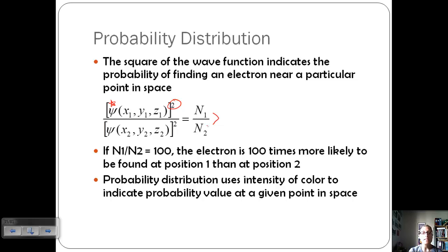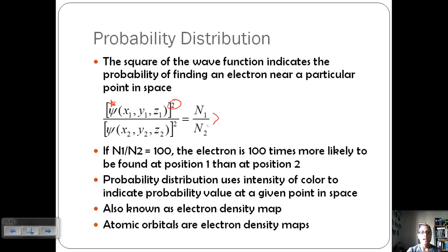Probability distribution uses intensity of color to indicate the probability value at a given point in space. And we'll look at some pictures of them. If you think of kind of like a heat map, it's a little bit like that. These are also known as electron density maps. Because if we've got a larger density, we're probably going to find electrons there more often. Atomic orbitals are electron density maps. Remember, we're not talking about the Bohr orbital, but these wave mechanical model orbitals.